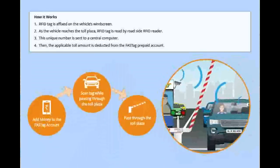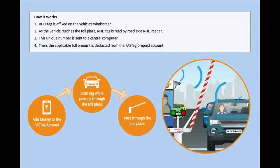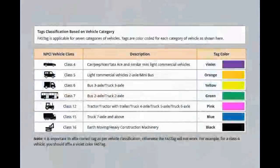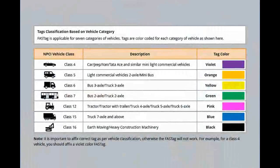Let's now learn how FASTag works. An RFID tag is affixed on the vehicle's windscreen. As the vehicle reaches the toll plaza, the RFID tag is read by a roadside RFID reader. This unique number is sent to a central computer, then the applicable toll amount is deducted from the FASTag prepaid account. FASTag is applicable for seven categories of vehicles.